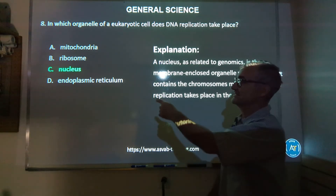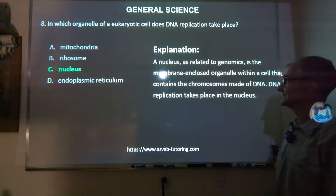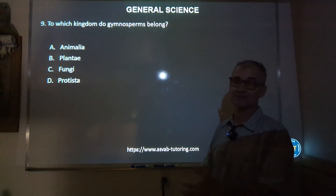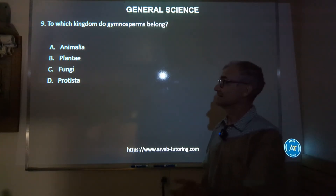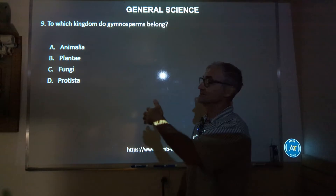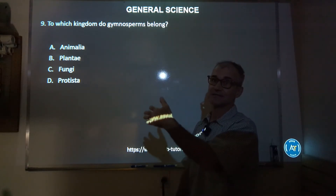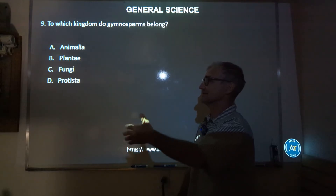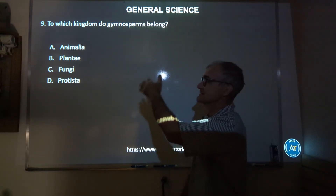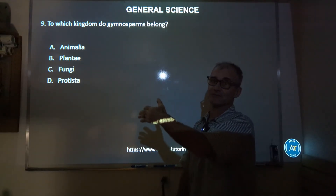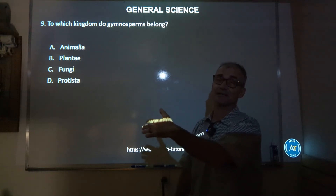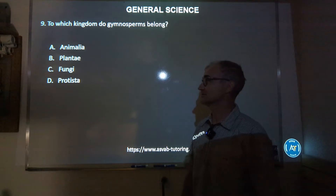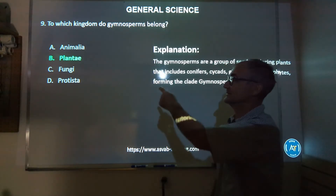Number eight: correct answer is C, nucleus. Number nine: if you don't know the answer, you can eliminate choices that don't make sense — like fungi, like mushrooms growing — that doesn't really have anything to do with this. If you can eliminate one possible answer, now your chances if you have to guess are out of three, not out of four, so your probabilities go up. Correct answer is B.